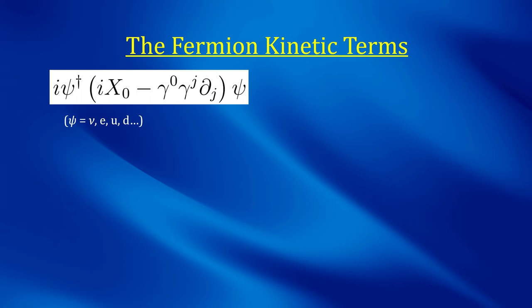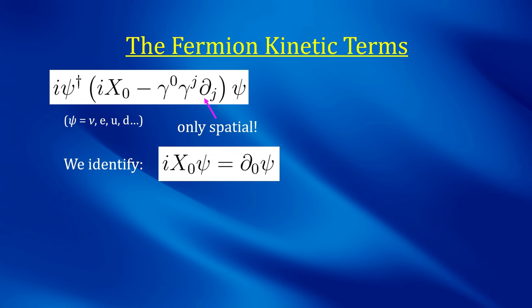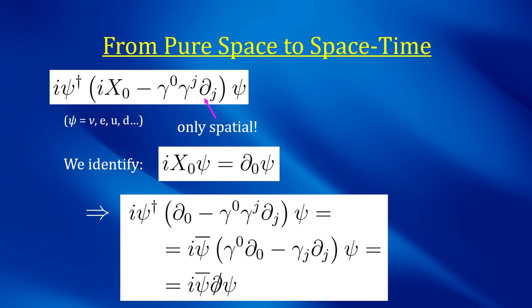In this slide, I wrote only the kinetic part of the action of any one fermion of the theory. As you can see, the true kinetic part of this expression, the one with the derivative, has only the spatial part. And then, in addition, there is that other part with the field x0. Now, if we identify i x0 psi to be equal to d0 psi, we recover the usual kinetic term in Lorentzian signature, which means in Minkowski spacetime, not pure space anymore.